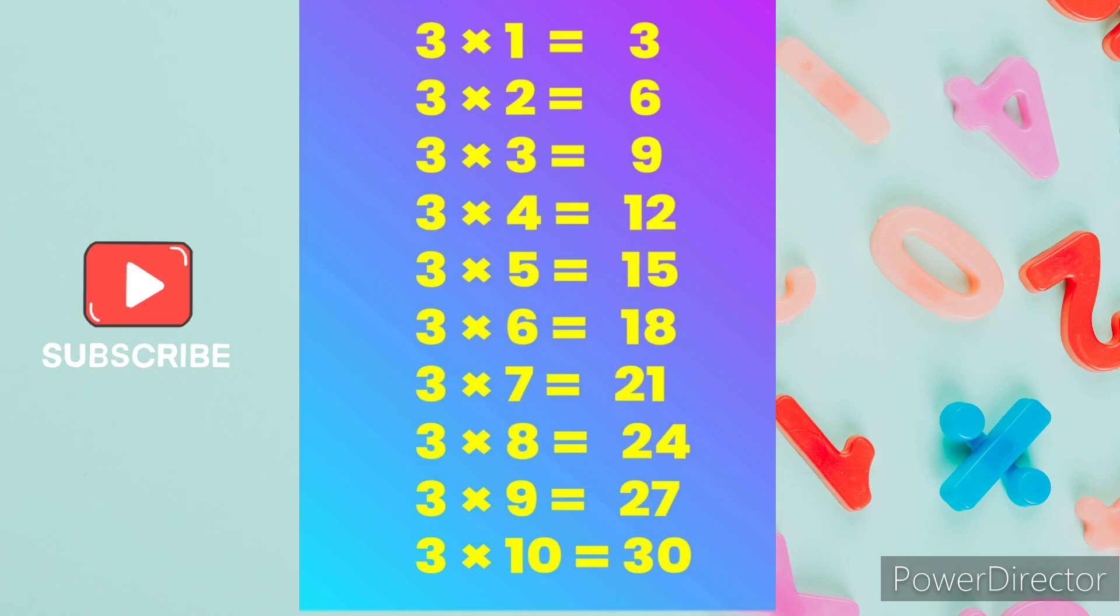3 1s are 3, 3 2s are 6, 3 3s are 9, 3 4s are 12, 3 5s are 15.